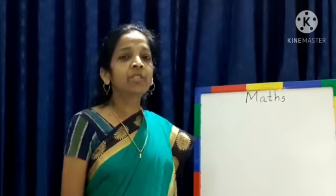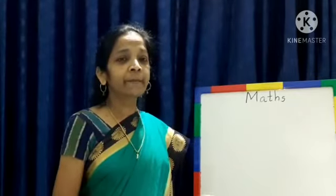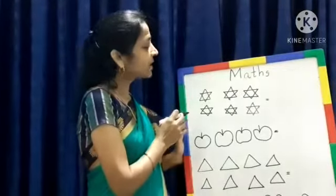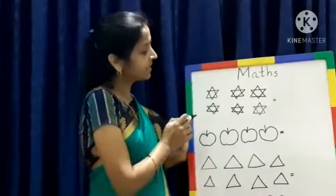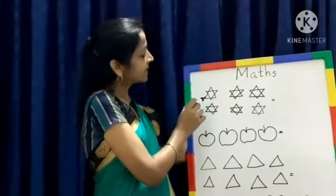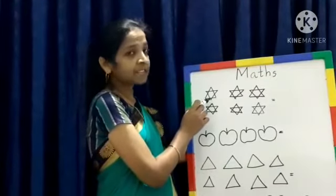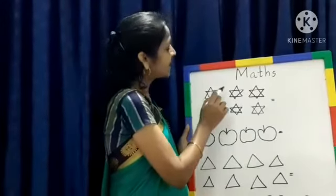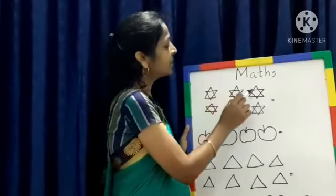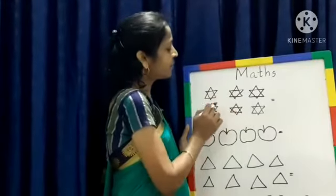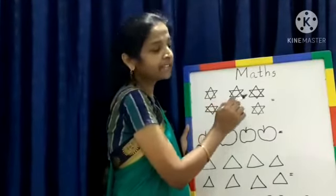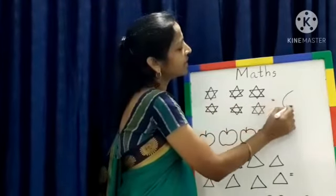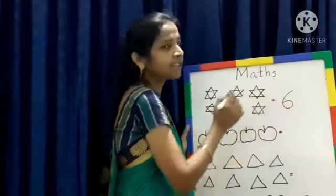Look at the board, children. Now look here. Stars. How many stars are there? 1, 2, 3, 4, 5, 6. So write here 6.